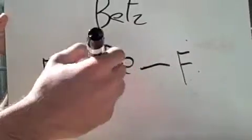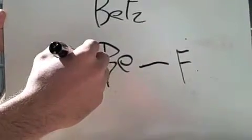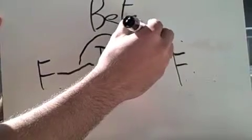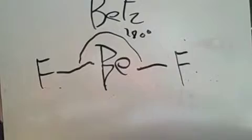The degree here, because it's linear, has to be 180 degrees. And because it's a linear geometry, it means that the electron geometry and the molecular geometry are going to be exactly the same in this case.